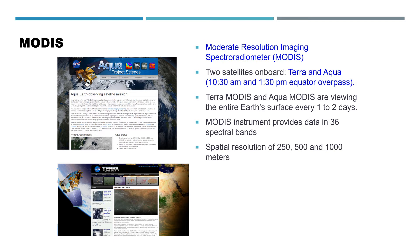The MODIS instrument also has 36 spectral bands, and it comes with three spatial resolutions. The first is 250 meters, the second is 500 meters, and the third is 1000 meters — one kilometer spatial resolution.